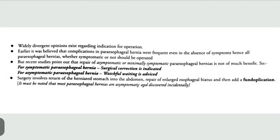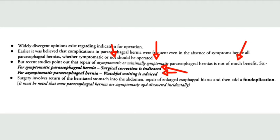For paraesophageal hernia management: earlier it was thought that complications could occur in both symptomatic and asymptomatic cases, so surgery was indicated for both. However, current studies indicate that repair of asymptomatic or minimally symptomatic paraesophageal hernia is not of much benefit. For symptomatic rolling/paraesophageal hernia, surgical correction — Nissen fundoplication — is indicated. For asymptomatic cases, watchful waiting is advised. Surgically, we first reduce the herniated stomach back into the abdomen, then perform fundoplication.